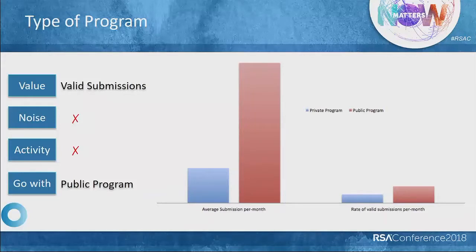To answer the question of what type of program to have, we are going to look at three key decision variables: number one, what is the value you want to derive from the program; number two, whether you are okay with the noise generated on the program; and number three, whether you want to invest time and effort in generating activity or buzz on the program. Looking at our data and keeping the number of researchers and duration the same, we saw more valid submissions on the public program than on the private program. However, we also saw a lot more total submissions in the public program, which means there were a lot more false positives.